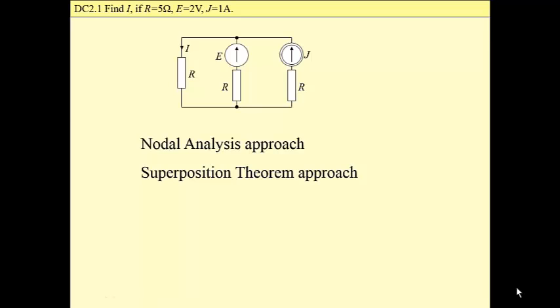We have a very simple circuit and our task is to find one current, namely the current that flows through this resistance. We will solve this problem by means of nodal analysis and then by means of a superposition theorem.